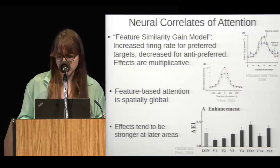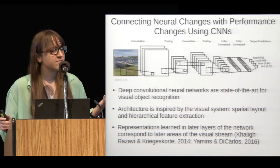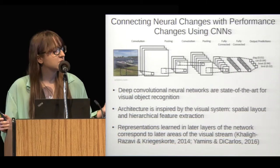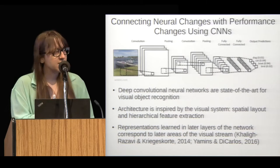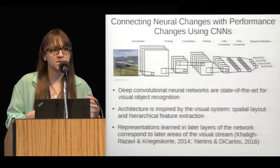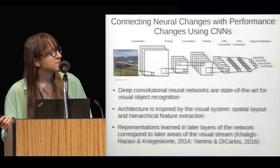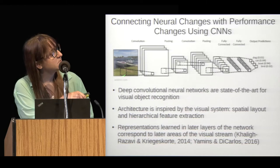We have these neural correlates of attention and these behavioral performance enhancements. How can these things be connected in a model? For that, I'm turning to convolutional neural networks, which are state-of-the-art for visual object recognition and other challenging visual tasks, and whose architecture is inspired by the visual system. Each convolutional layer has multiple feature maps resulting from applying a given filter to the layer below, and each unit corresponds to activity from applying the filter to a specific spatial location — there's an inherent retinotopy built into the architecture. Stacking convolutions with pooling layers leads to units later in the network corresponding to more complex features with larger receptive field sizes, just like in the visual system.